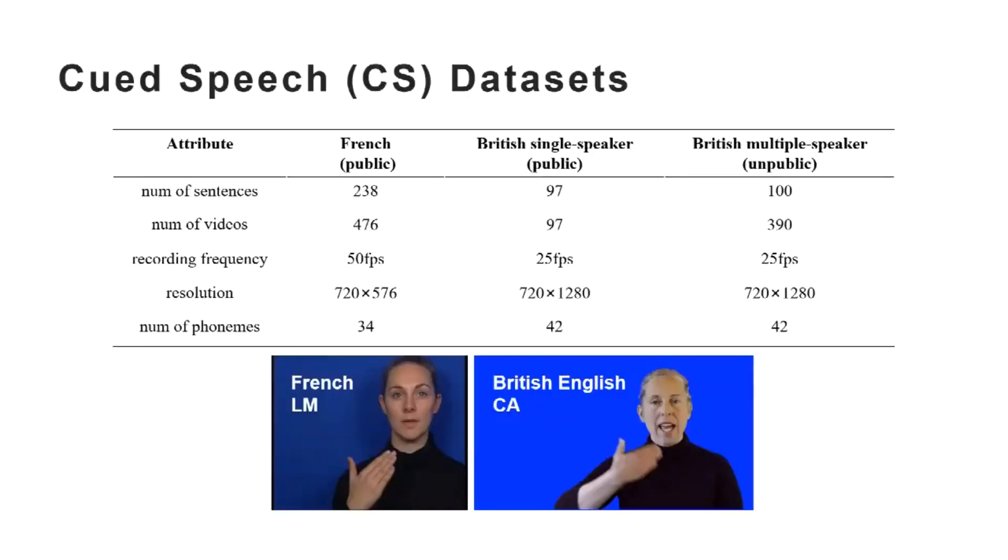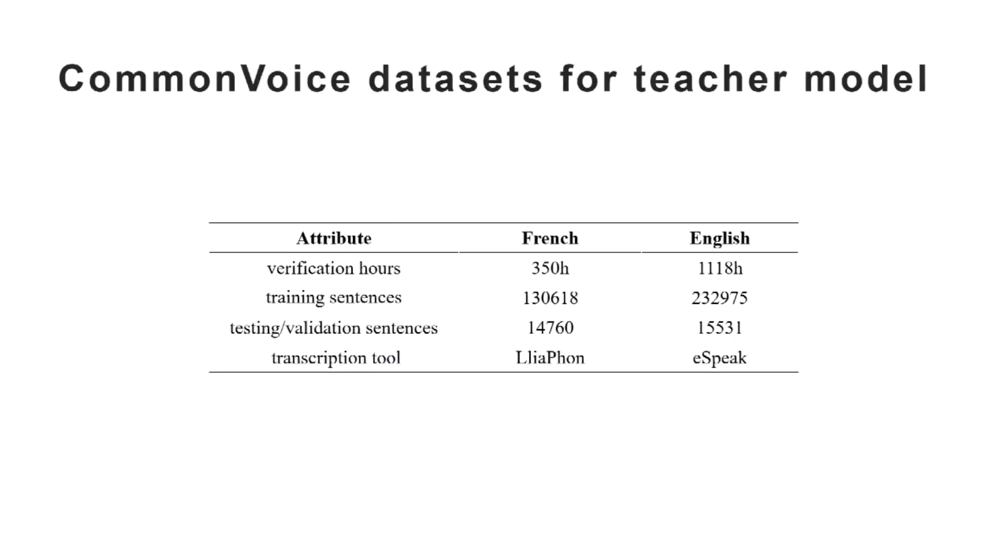Currently, there are three cued speech datasets, which are French, single-speaker British English, and a newly built British English with five speakers. We trained two teacher models for distillation with the French and English speech datasets in CommonVoice. CommonVoice is an open-source project launched by Mozilla, including French and English speech data.